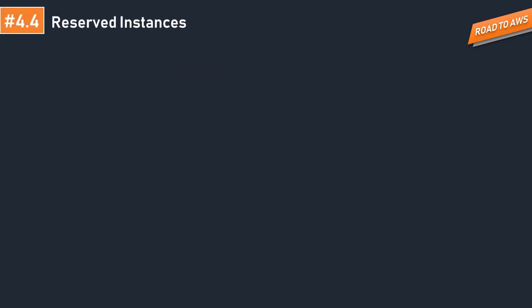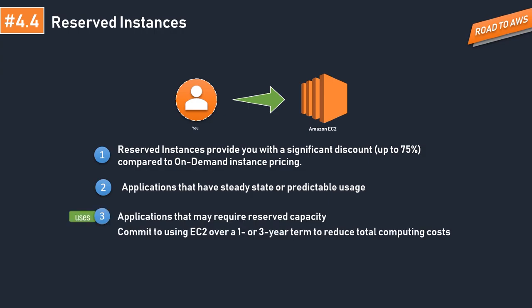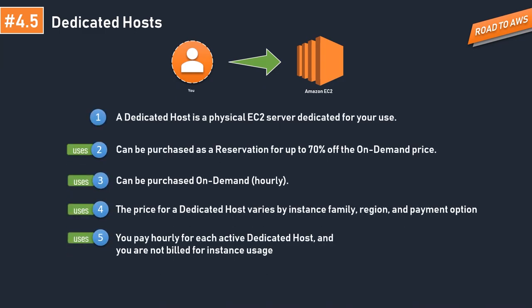Reserved instances offer up to 75% discount compared to on-demand instances, but only if you avail the savings plan. With a savings plan, you commit to a consistent usage amount measured in US dollars per hour, giving you flexibility to use the instance configuration that best meets your needs. Committing to one or three years provides considerable cost reduction. An Amazon EC2 dedicated host is a physical server with EC2 capacity fully dedicated to your use. Unlike dedicated instances where you pay per instance, with dedicated hosts you pay for the host itself.